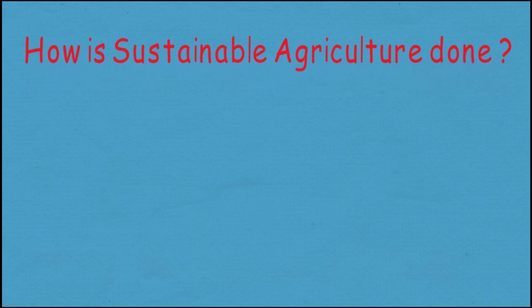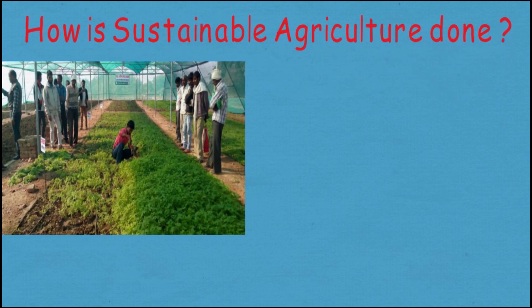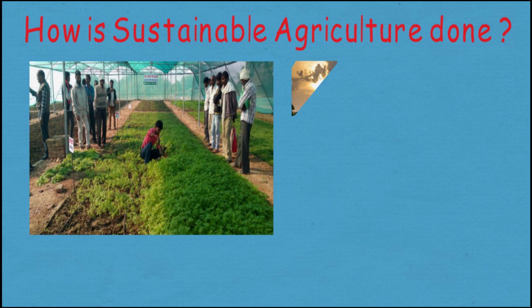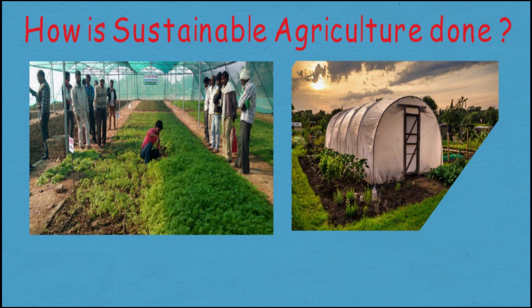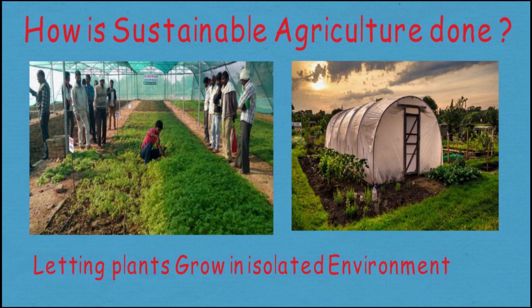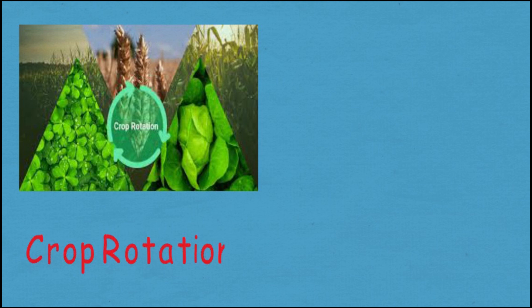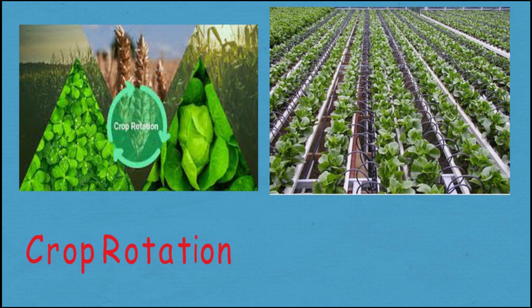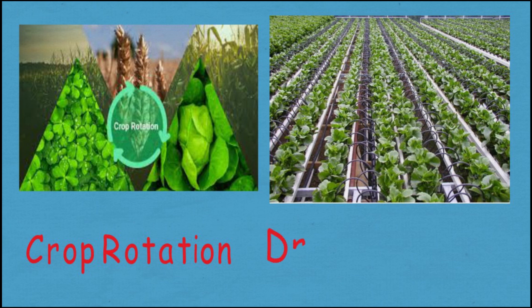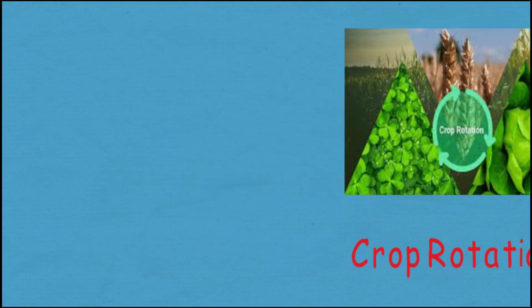There are many farming strategies used that help make agriculture more sustainable. Some of the most common techniques include growing plants that can create their own nutrients to reduce the use of fertilizers. Other techniques include rotating crops, which minimize pesticide use and help in replenishing the soil with the nutrients that have been used up. Sustainable farmers also use water management systems such as drip irrigation that waste less water.